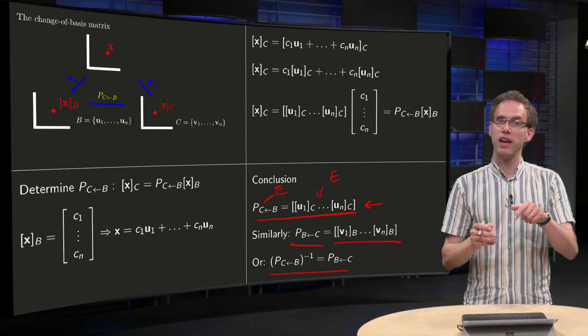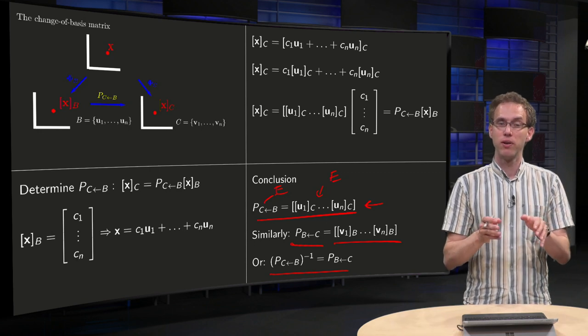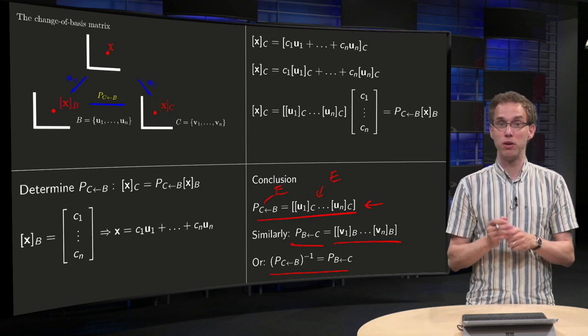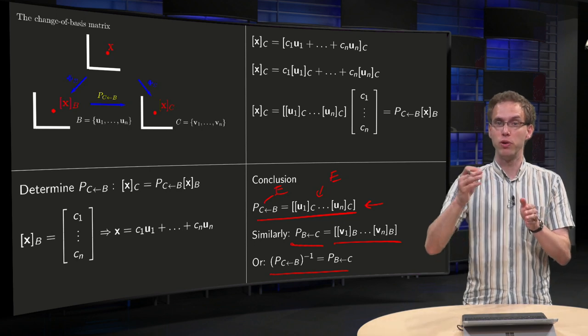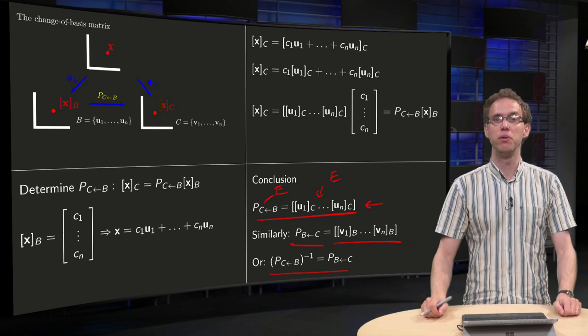So if you replace your C by an E, on the left-hand side you get your P_B, and on the right-hand side you get the matrix of u_1 up till u_n, which is indeed your P_B.